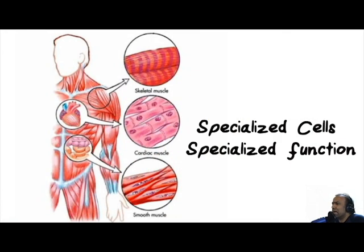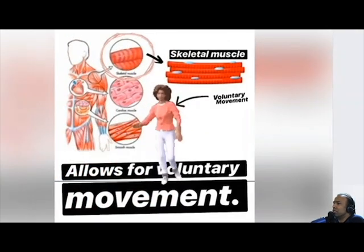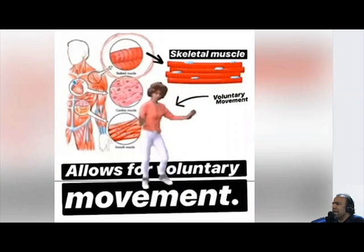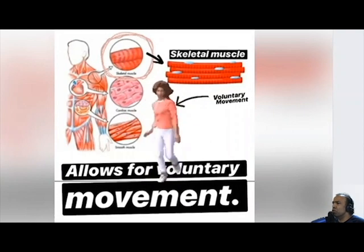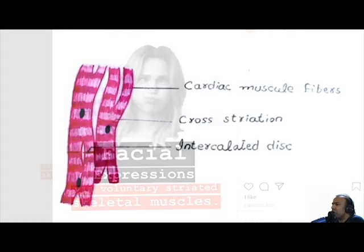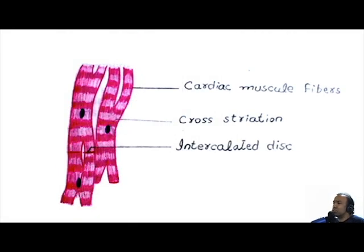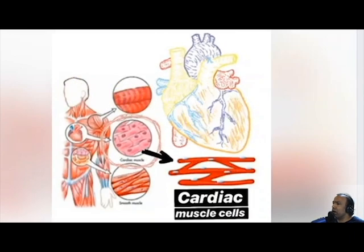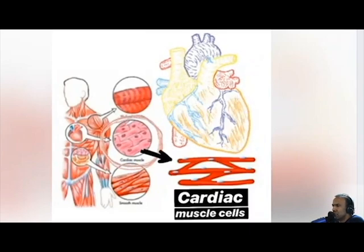Specialized cell types provide specialized functions. For example, striated multinucleated skeletal muscle cells allow for voluntary motion — the voluntary movement of our arms, legs, facial expressions, etc. Cardiac muscle cells, which are interconnected by intercalated discs, have gap junctions allowing for signal transmission needed for contraction, allowing the heart to act as a pump providing movement of blood — that is, circulation.